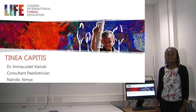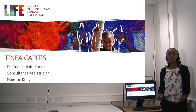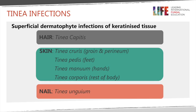The first part of our talk is about the overview of the infection. When you talk about tinea infections, these are superficial dermatophyte infections of keratinized tissue, meaning infections that affect skin and skin appendages. The naming of the tinea infections depends on the location where the infection is found, so if the infection is on the hair, then that is called tinea capitis.